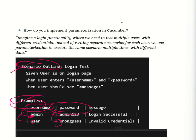Parametrization means it allows us to pass dynamic test data into a step definition, which helps to avoid duplicate step definitions and makes tests more flexible, reusable, and maintainable. Parametrization means we have to execute multiple sets of data at the same time. Using parametrization, we can write a single scenario that works for multiple inputs — for example, two usernames and two passwords — and run them multiple times.